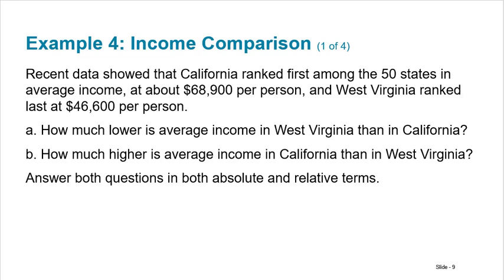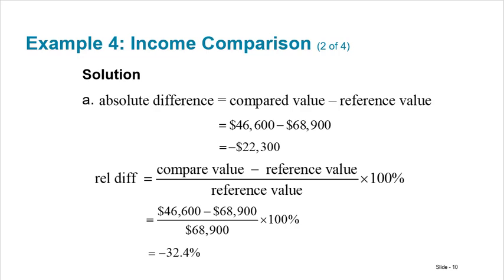Recent data showed that California ranked first among the 50 states in average income at about $68,900 per person; West Virginia ranked last at $46,600. How much lower is average income in West Virginia? The absolute difference is $22,300. Looking from West Virginia's perspective compared to California, the relative difference is that $22,300 divided by California's $68,900, so West Virginia is 32.4% less.